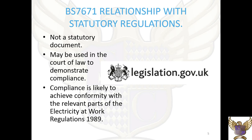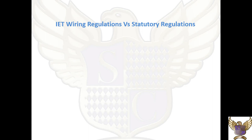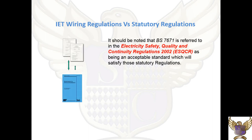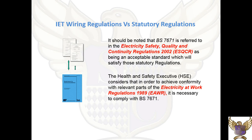BS 7671 and its relationship with statutory regulations — BS 7671 is not a statutory document. BS 7671 is referred to in the electricity safety, quality and continuity regulations as being an acceptable standard which will satisfy those statutory regulations. So if we comply with the 18th edition wiring regulations, we are also satisfying the requirements for statutory regulations.